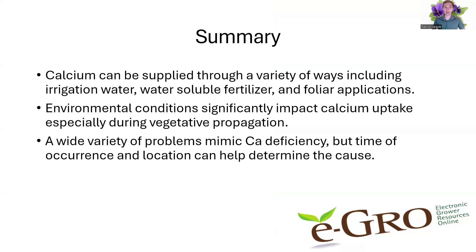So what did we learn and what are our take-homes today? Calcium can be supplied through a variety of ways, including your water, water-soluble fertilizers, or a foliar application. Your environmental conditions can significantly impact calcium uptake, even if you're supplying it. One of our big problems is in vegetative propagation — minding that mist creates your vapor pressure deficit to get the plant to transpire. A wide variety of problems can mimic calcium deficiency, but time, occurrence, and location can help you determine the cause. There are also a lot of resources on eGrow for calcium diagnostics and mimics. Thank you for your time today.